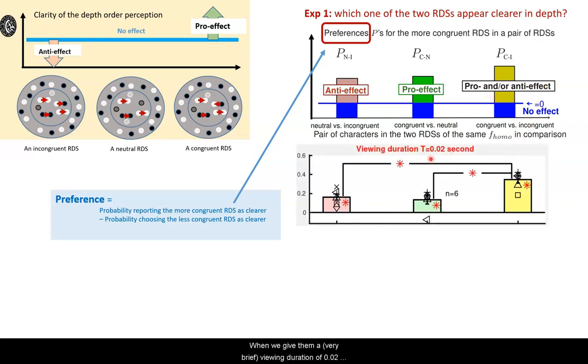When we give them a viewing duration of 0.02 second, indeed they prefer the neutral one here, congruent one here, and congruent one here.